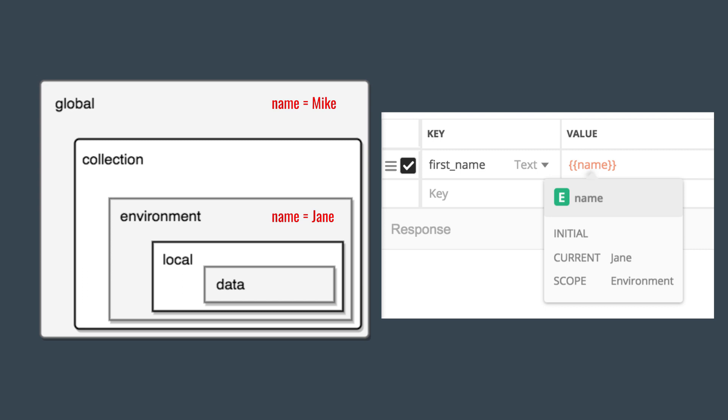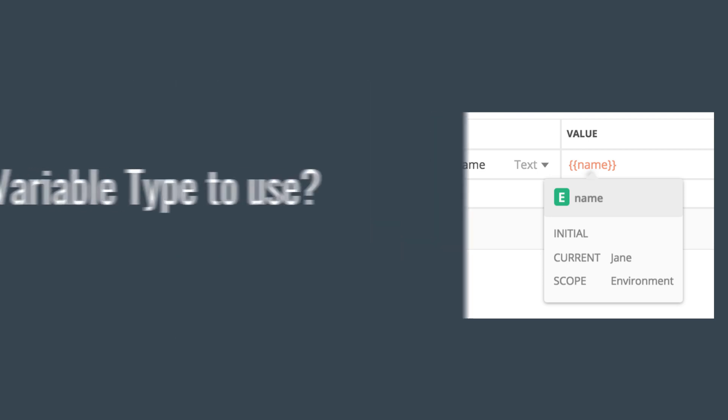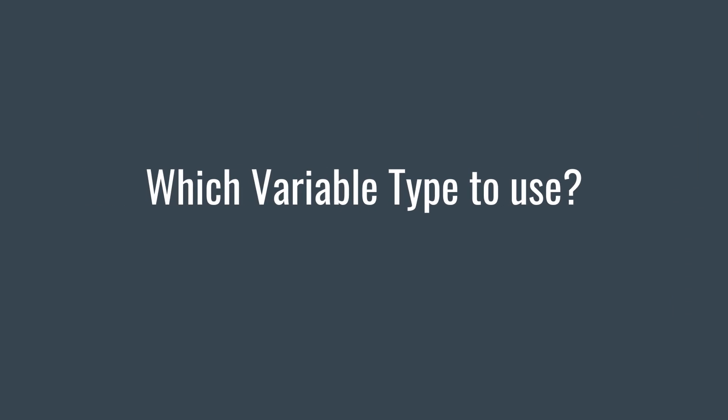Postman will see 'name' in the global space, but also in an environment scope. Environment is more powerful than global, so when this request is sent out, the value picked up will be 'Jane' and not 'Mike'. You can easily inspect this by hovering over the value in Postman — you will see the value picked up is 'Jane' and it's scoped in the environment. This is what scope means: in which scope is this variable defined.